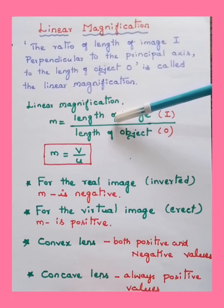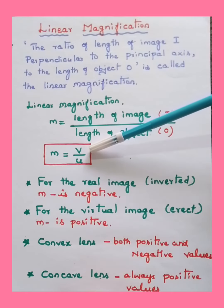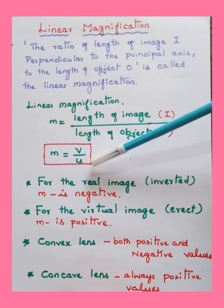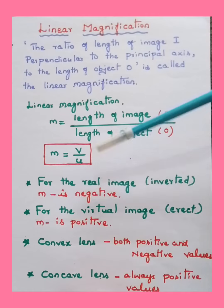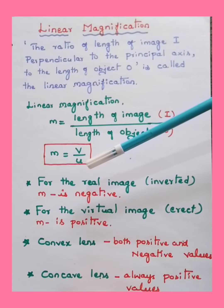We can also write linear magnification in terms of distance of the object and distance of the image. If distance of the image is v and distance of the object is u, then linear magnification m equals v by u. You can express it either in terms of lengths or distances.